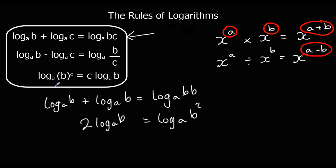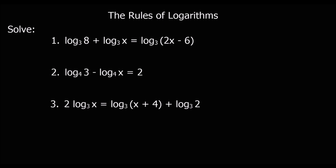Those are the rules of logs. For the first example: log base 3 of 8 plus log base 3 of x equals log base 3 of (2x minus 6). Using the addition rule, two logs with the same base added together means we multiply the answers, so the left side becomes log base 3 of 8x.